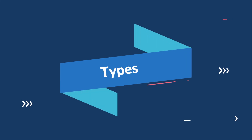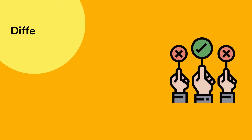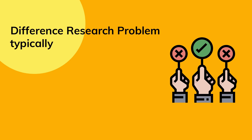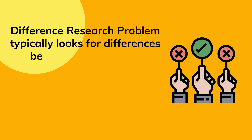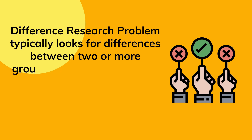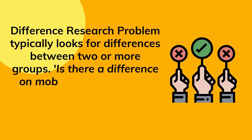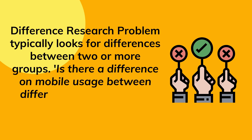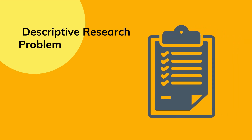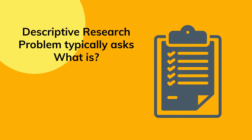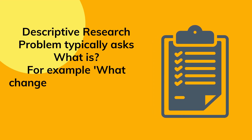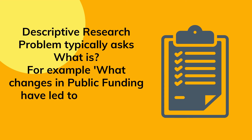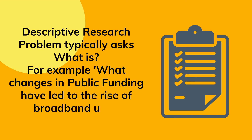We'll now discuss four different ways of constructing the research problem. One simpler way is the difference research problem, which typically looks for differences between two or more groups — for example, 'Is there a difference in mobile usage between different income groups?' The descriptive research problem typically asks 'what is' — for example, 'What changes in public funding have led to the rise of broadband use?'